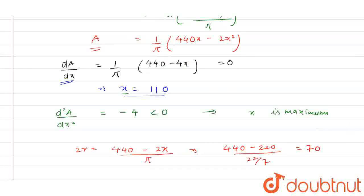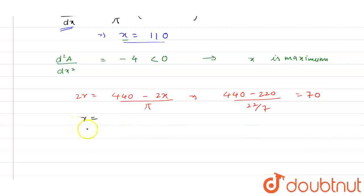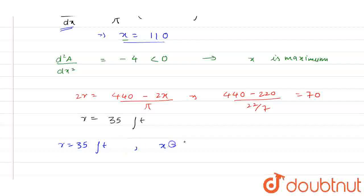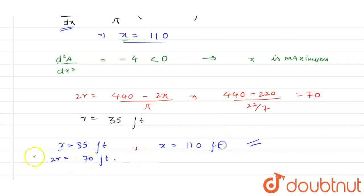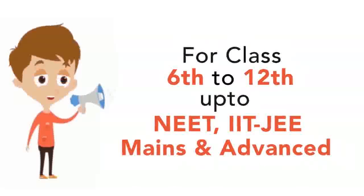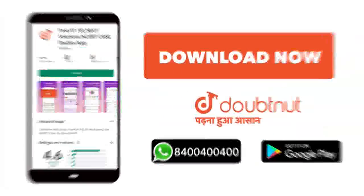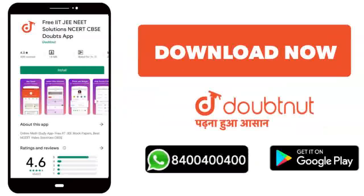From here we can say that R is equal to 35 feet. So we can say that the maximum sides of the rectangle are R = 35 feet, 2R = 70 feet, and X = 110 feet. This is the answer. I hope you guys liked it. Thank you.